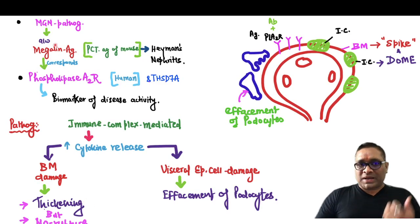When we talk about pathogenesis, pathogenesis of Membranous is associated with megalin antigen. Megalin antigen is a proximal tubule antigen which was the experimental model in the mouse, and this was called Heyman's nephritis. In human being, corresponding to the megalin antigen was phospholipase A2 receptor.